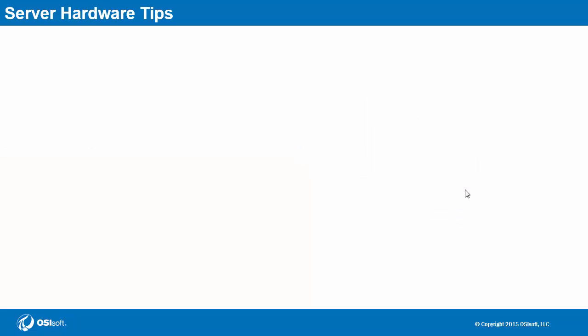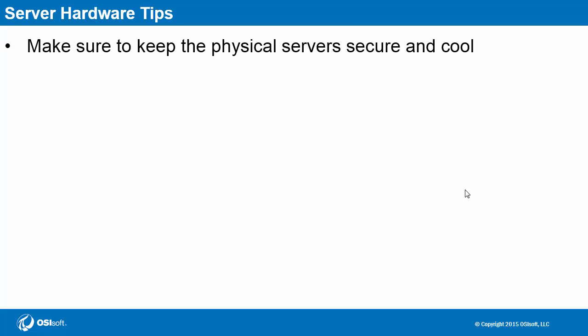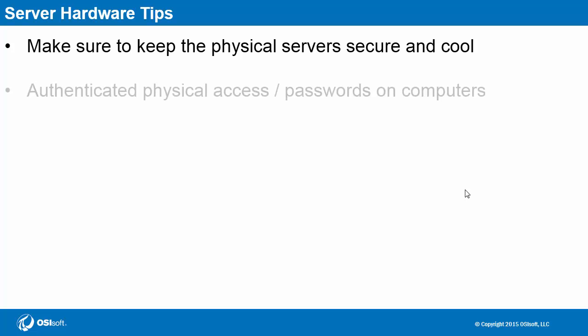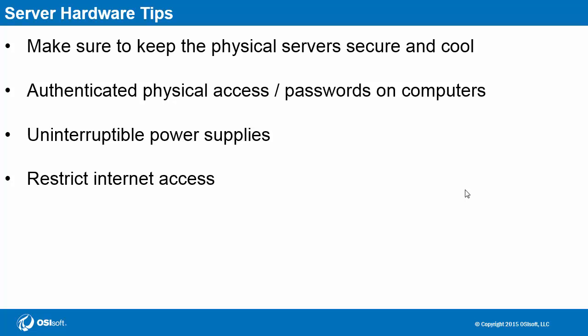Lastly, as is common for mission-critical server hardware, it's important to keep the server in a secured area, somewhere cool and maintained. Some considerations for this room include authenticated physical access and passwords, as well as uninterruptible power supplies. Restricting the machine from the internet is also common. Consider the pros and cons of these high-level options we've gone over to help steer the direction of your own PI System architecture planning.